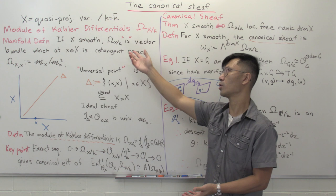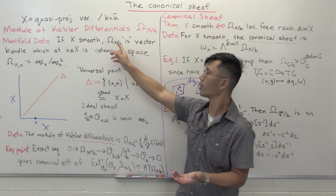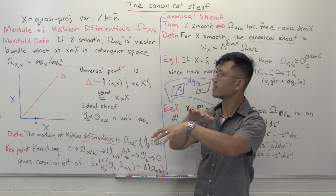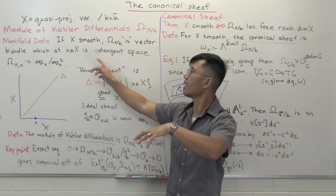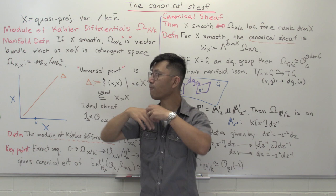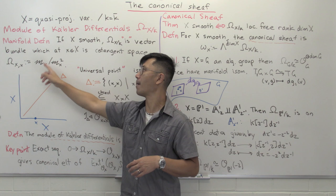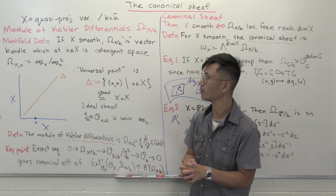Essentially what this is should be a notion like the cotangent bundle. So let me remind you how the manifold definition goes. If X is smooth, corresponding to a manifold, then what is omega X over k? It's a type of vector bundle — a vector space varying over X — and at each point little x inside X, it's basically just the cotangent space. One way to think about the cotangent space is to look at m_x, the space of all functions vanishing at that x, modulo m_x squared, and this is dual to the tangent space.